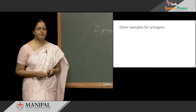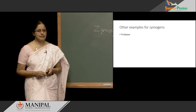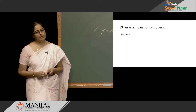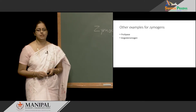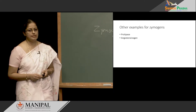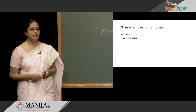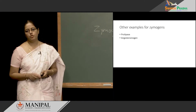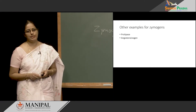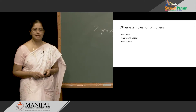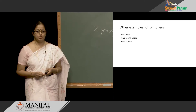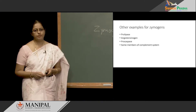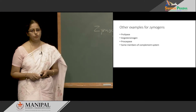We have some more examples for Zymogens. Prolipase is a pancreatic enzyme which gets activated only in the duodenum. Angiotensinogen is a member of the renin-angiotensin system involved in controlling blood pressure and fluid balance — it also circulates as a Zymogen. Procaspase is an enzyme of apoptosis that is present as a Zymogen. Some members of the complement system, involved in providing immunity, are also produced as Zymogens.